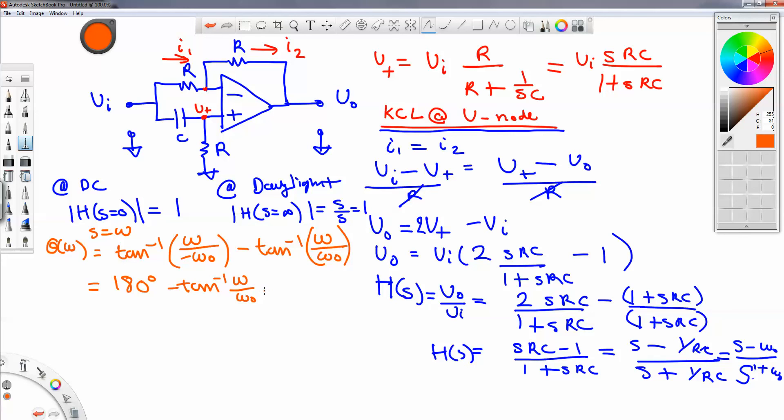And the reason why we're doing this is because this becomes more obvious later on to prove that this is indeed an all-pass filter. That is, at DC, you have 180 degree phase shift, and at infinity, you have a zero degree phase shift.